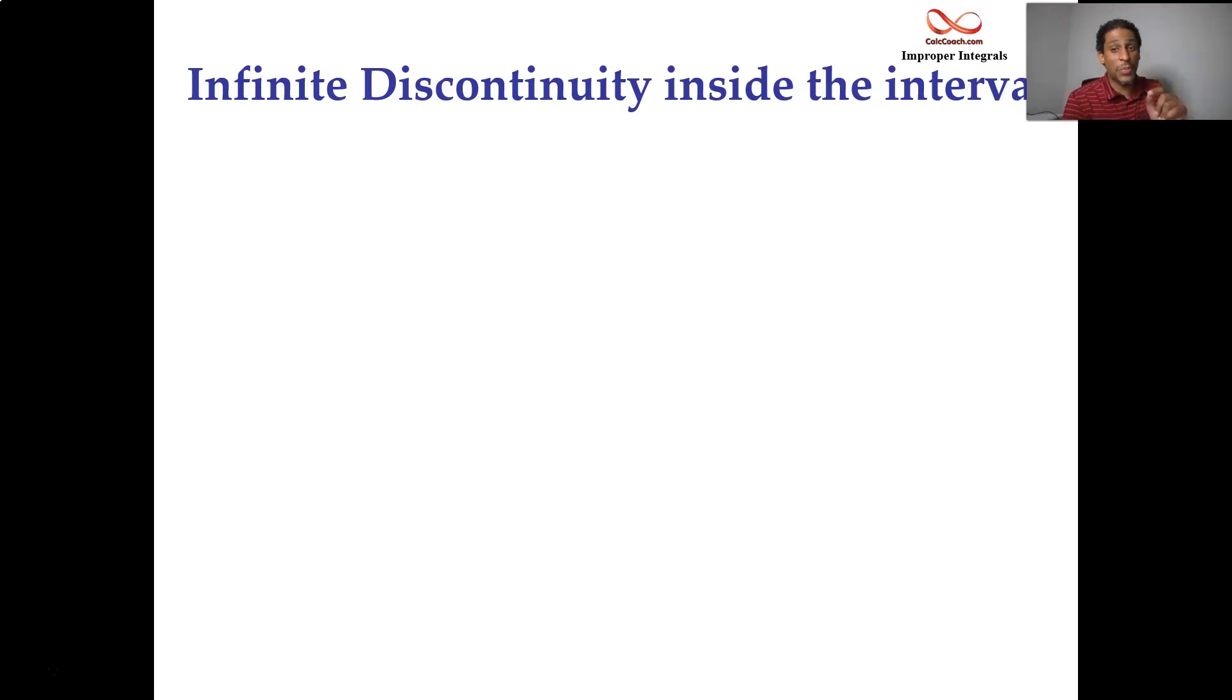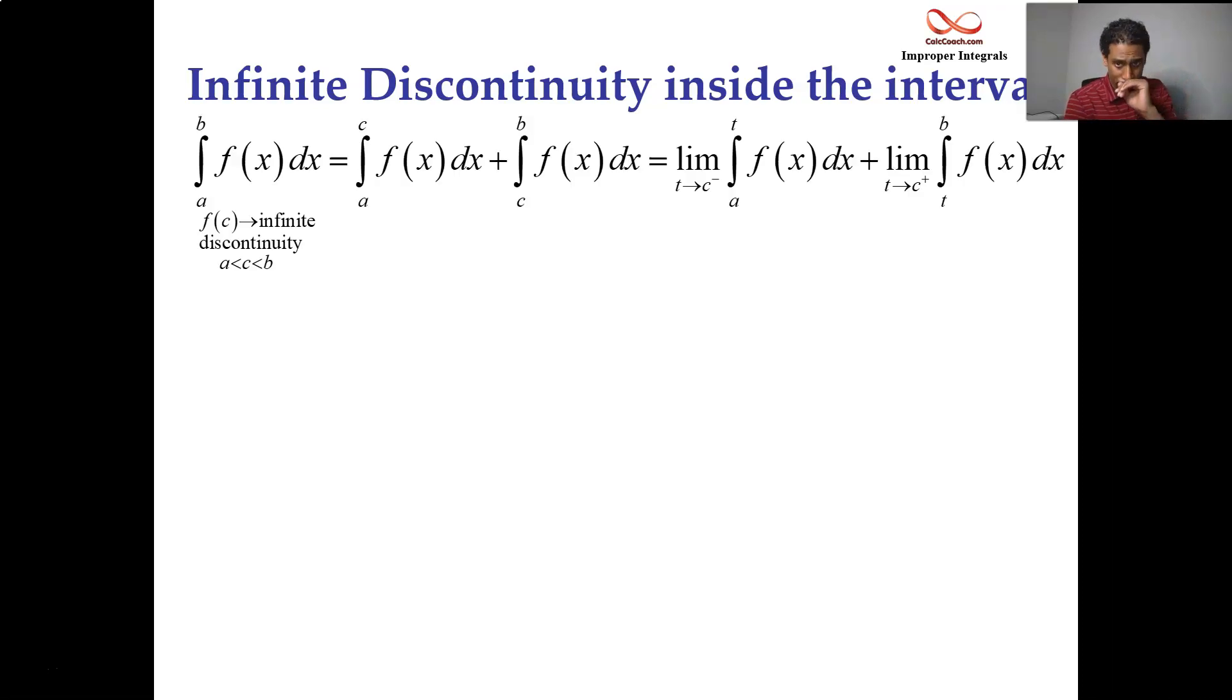Now in this particular example, something very strange happens. The place where the function is discontinuous at is not the upper limit, it's not the lower limit. The place where the function is discontinuous at is in between the upper and the lower limit, call it C, in between A and B. So you have to break the integral into two separate integrals, both of which are improper, where you go from A to C and then you go from C to B. And then you rip out those Cs, you replace them with a variable T, and then you let that variable approach C from the appropriate side.